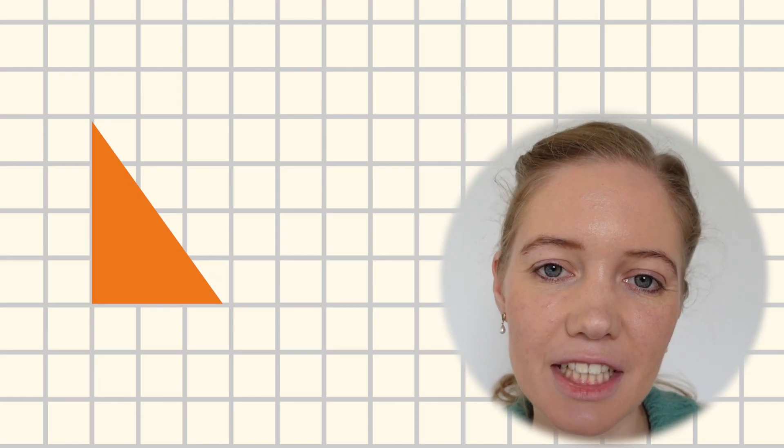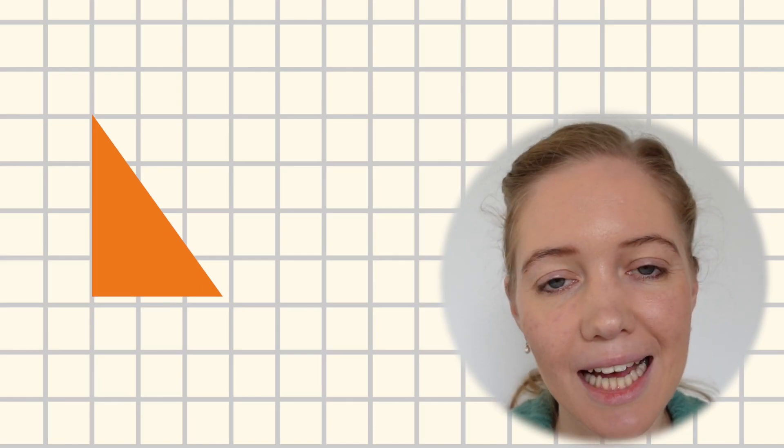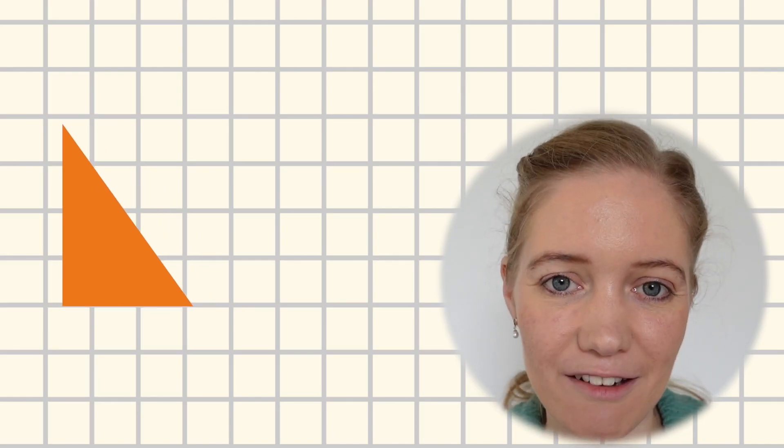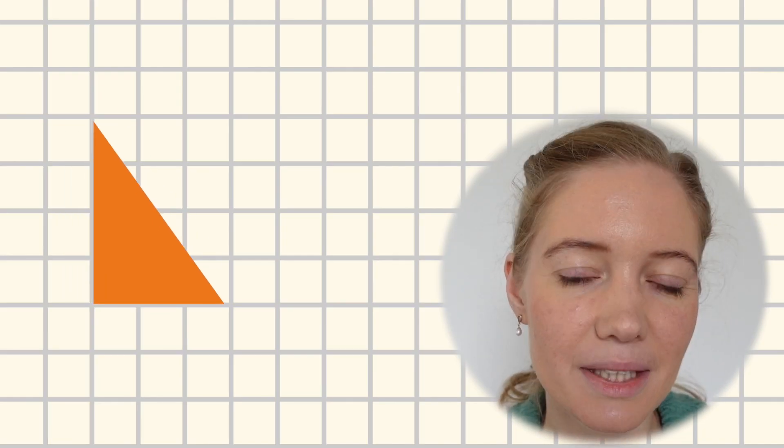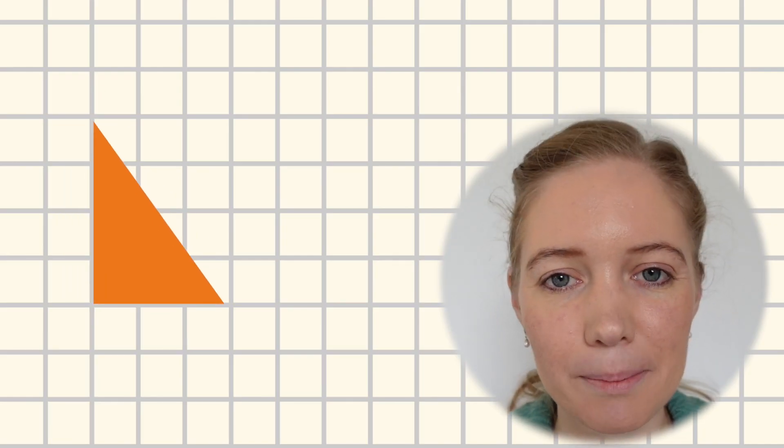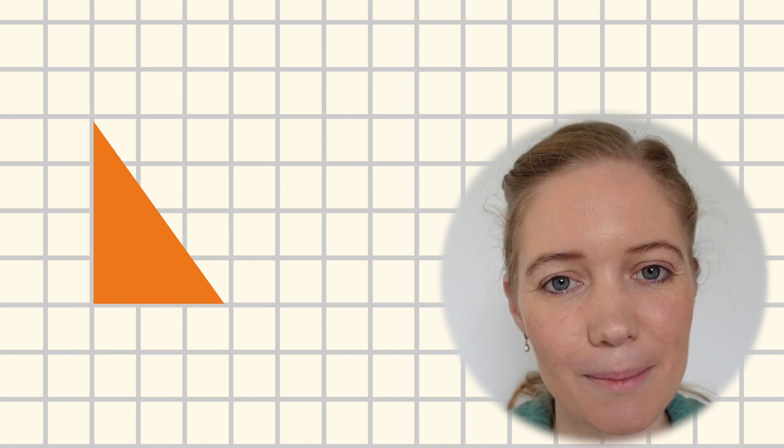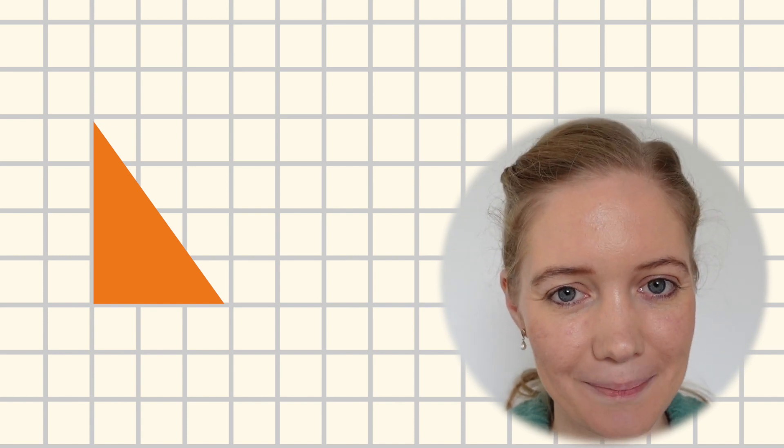Translation is a term used in geometry to describe the movement of shapes from one position to another. The translation of a shape will move it up, down, left or right, but the dimensions and appearance of the shape will stay the same.